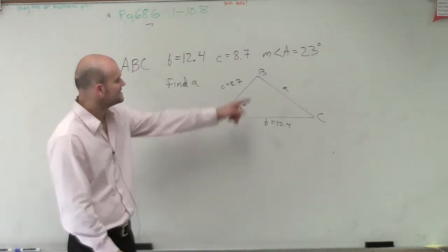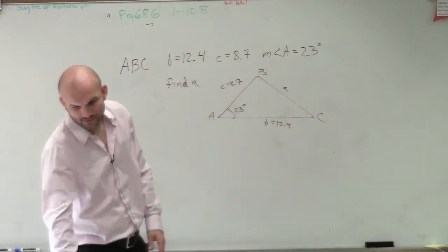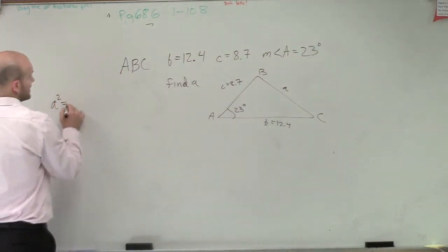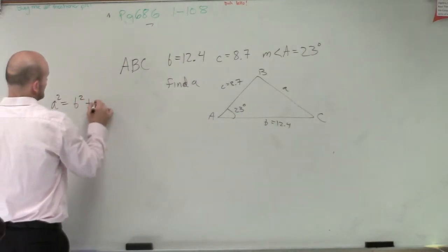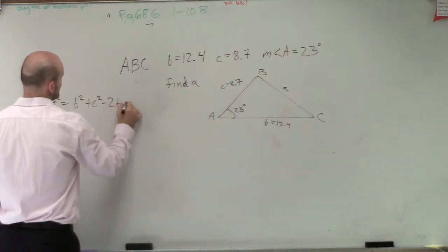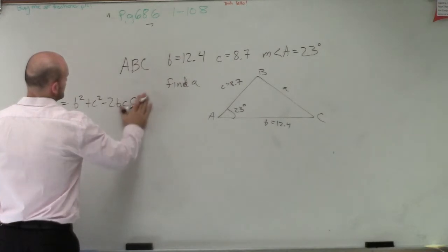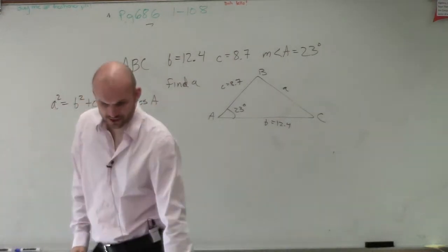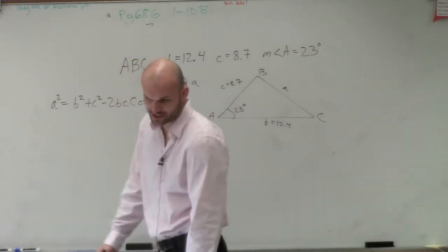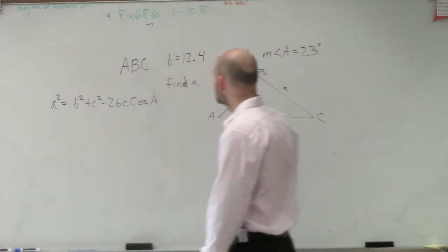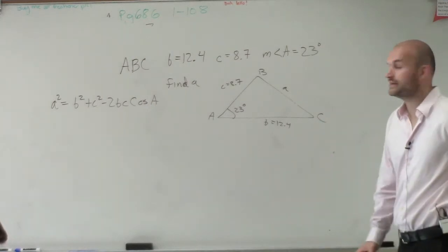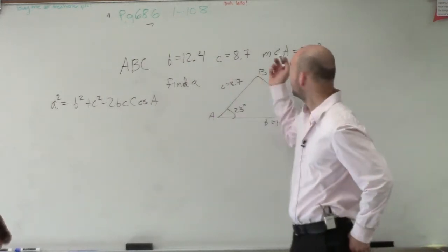So they're asking us to find a. I can write out: a squared equals b squared plus c squared minus 2 times b times c times the cosine of A. This is me just going off my memory, so I want to double check it. Equals b squared plus c squared minus 2 times b times c times cosine of A. Awesome. Now we just need to plug in what we need and then solve for a.